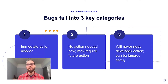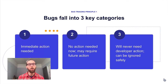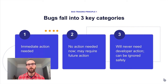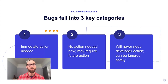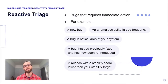It's useful to break bugs down into three categories. First, there are bugs that need immediate action — things requiring developer intervention, maybe rolling back a recent release or flipping a feature flag. Second, there are bugs that don't require immediate action but may require it in the future if they become more impactful. Third, there are bugs that are safe to ignore regardless of frequency. The first two categories are most interesting for our purposes.